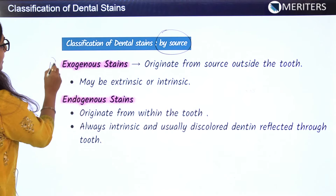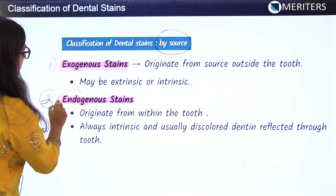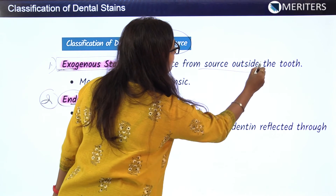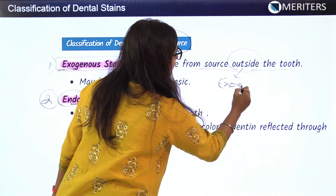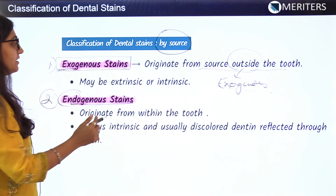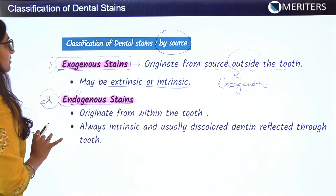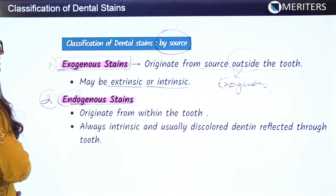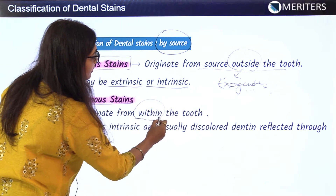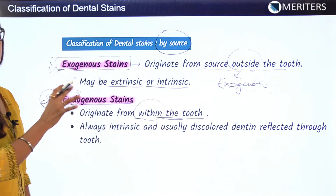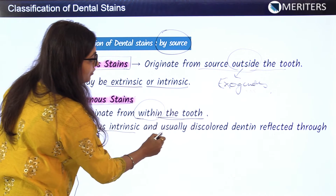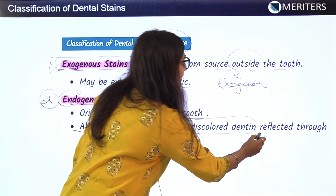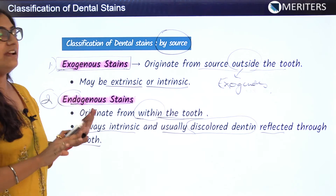Another method of classifying dental stains is by the source of origin: exogenous and endogenous stains. Exogenous means the source originates outside the tooth, and they may cause either extrinsic or intrinsic discoloration, but the source is external. Endogenous stains have a source within the tooth — they are always intrinsic and are usually due to discolored dentine, which causes discoloration reflected through the tooth.